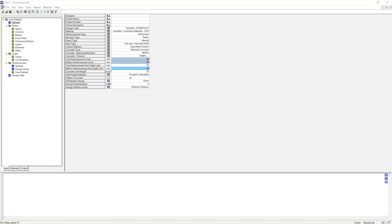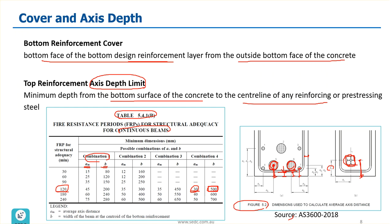Looking at the code requirements, for example the definition of bottom reinforcement cover: it is the distance from the bottom face of the bottom design reinforcement layer to the outside bottom face of the concrete. So if you are looking at the reinforcement with a tie, the cover is measured from the bottom reinforcement to the outside concrete surface. Similarly, from the side, the cover would be to the side reinforcement.